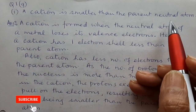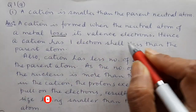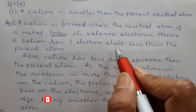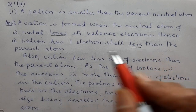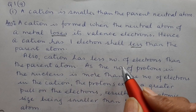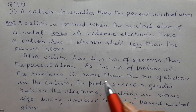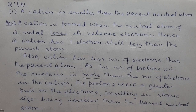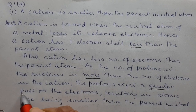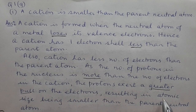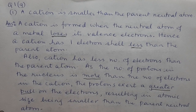Answer 1: A cation is formed when a neutral metal atom loses its valence electron, so a cation has one electron shell less than the parent atom, making its size smaller. Also, the cation has fewer electrons than protons; the greater nuclear pull on the remaining electrons results in an atomic size smaller than the parent neutral atom.